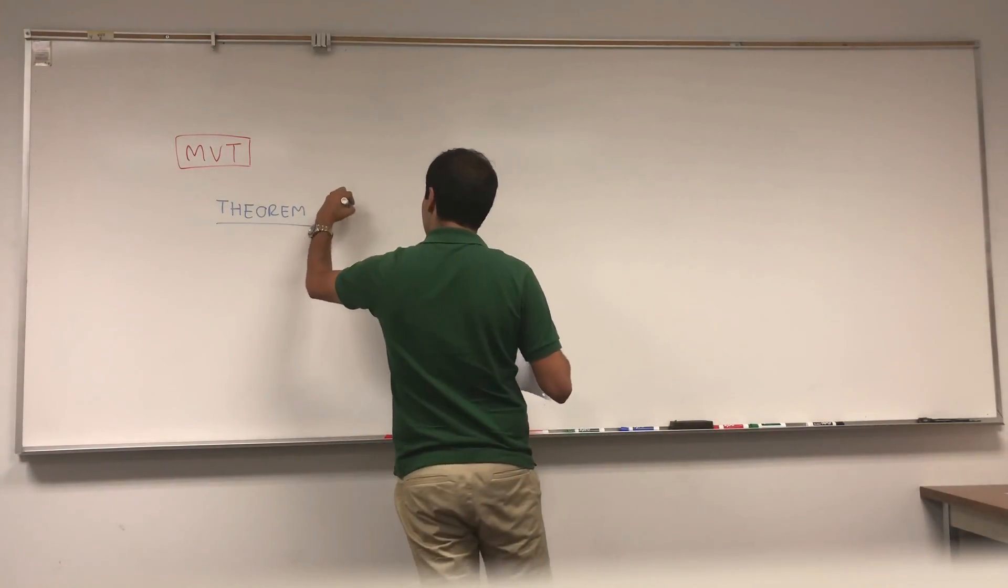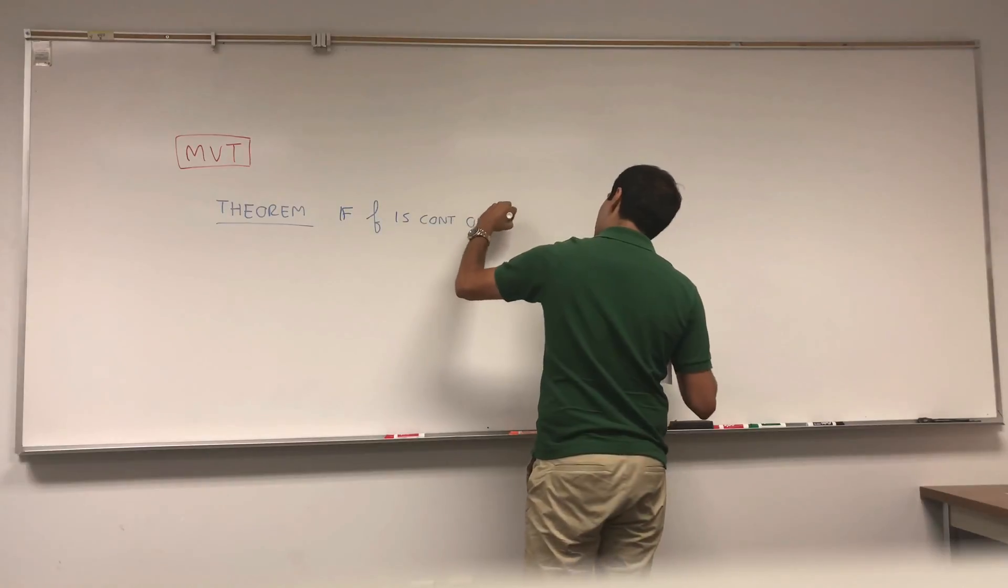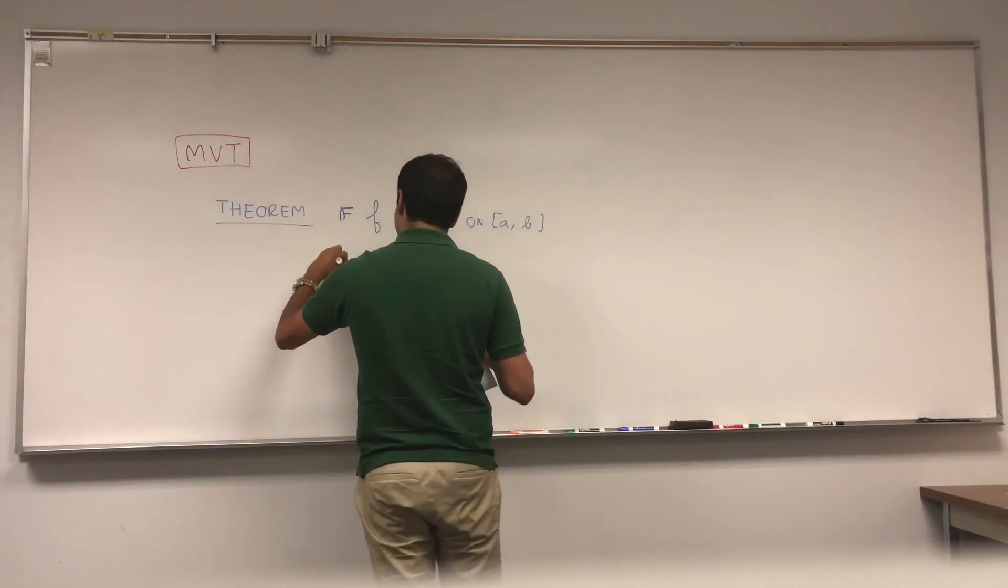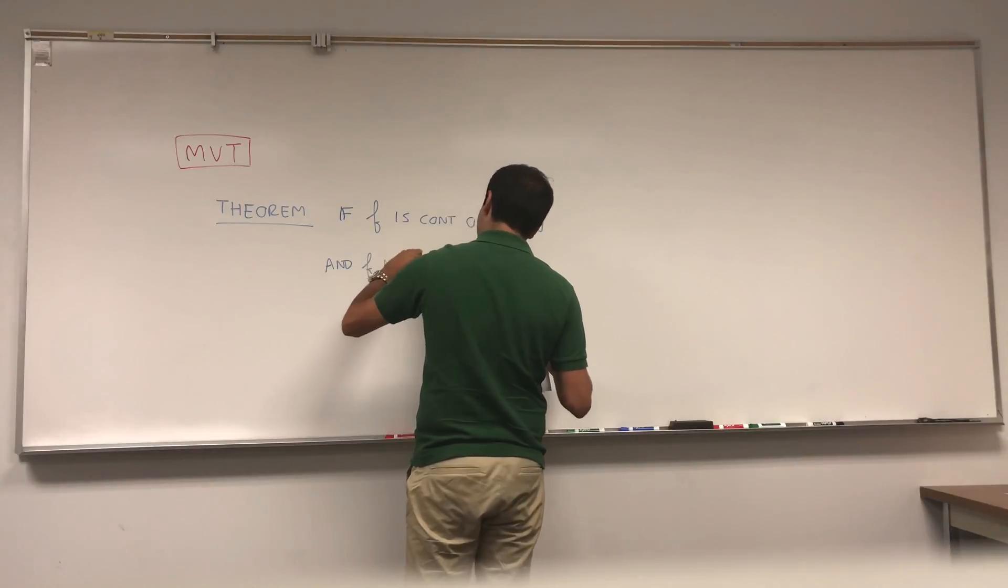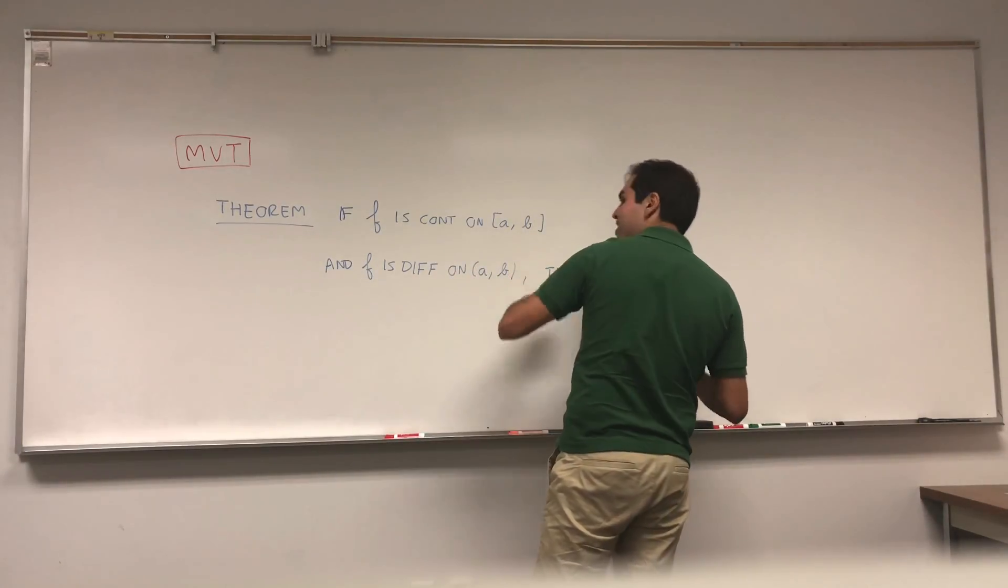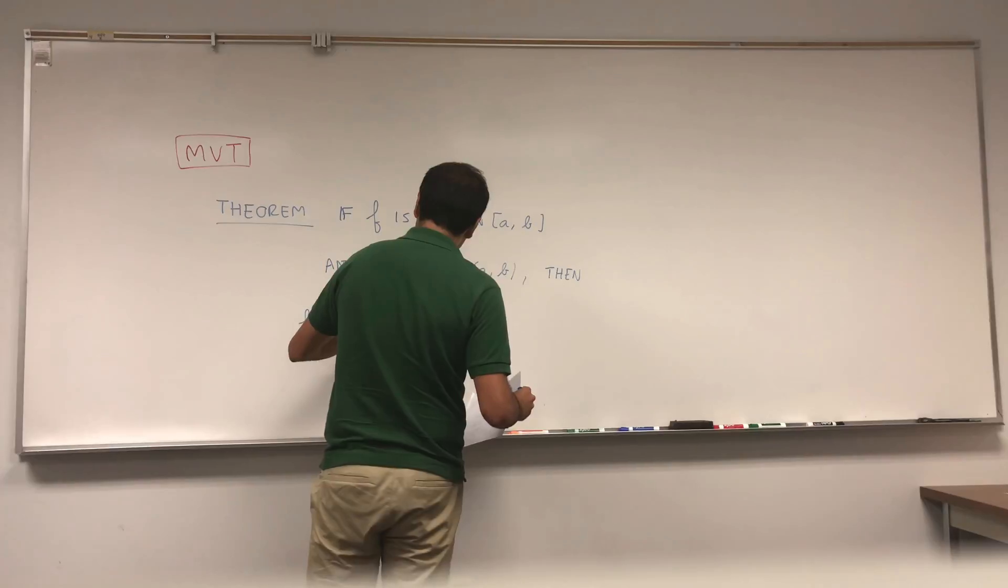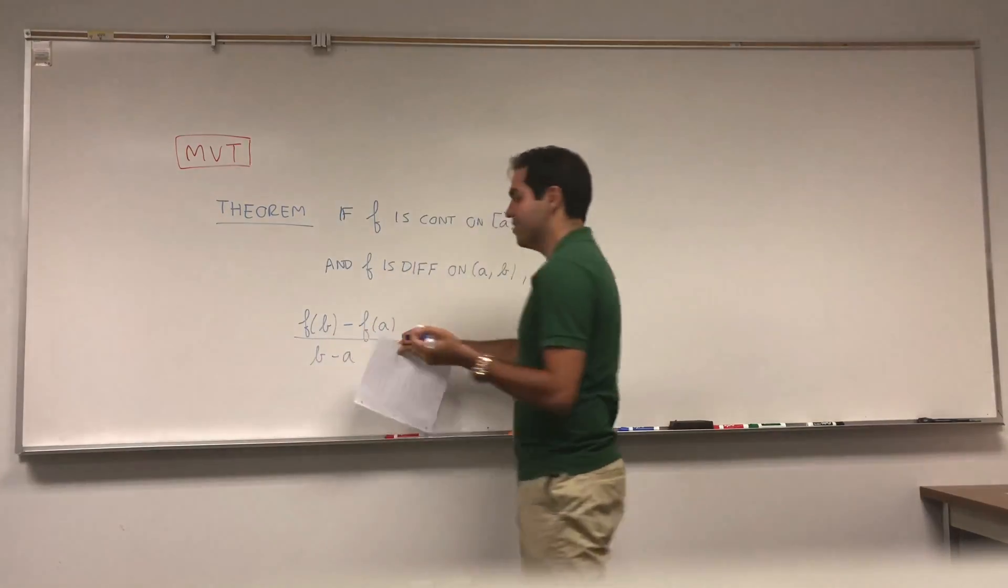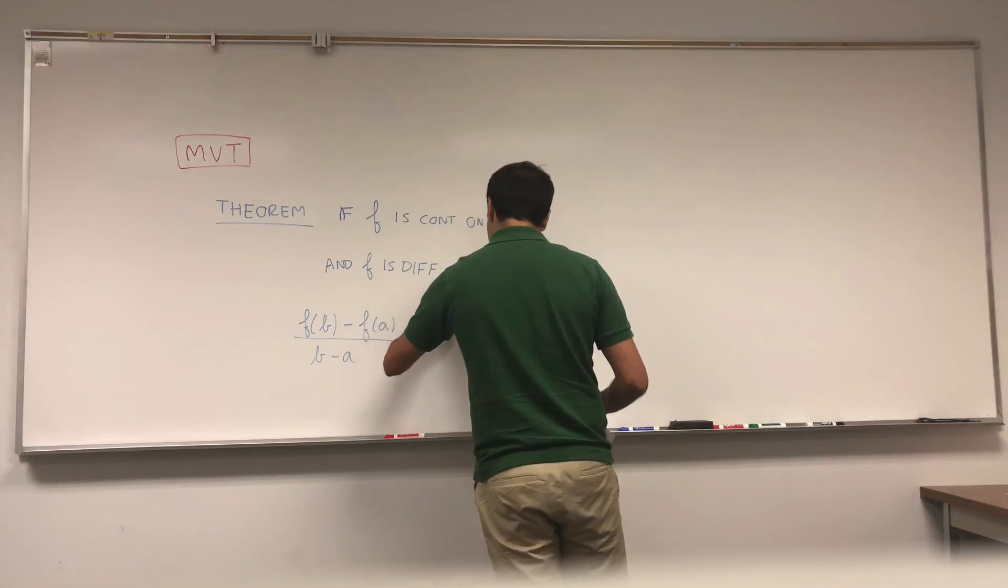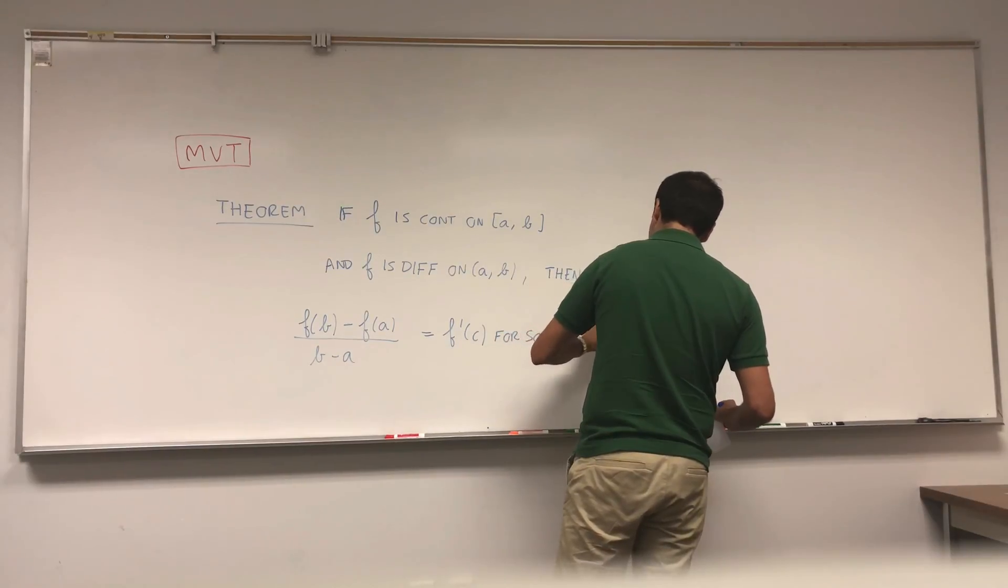So, if f, suppose you have a continuous function on a closed interval [a,b], and of course it involves derivatives, so we also have to assume it's differentiable. And f is differentiable on the open interval (a,b). Then it turns out that the following quantity can be simplified: f(b) minus f(a) over b minus a. Now I'll tell you in a second what that is. This quantity turns out it equals to f prime of c, for some c in the open interval (a,b).